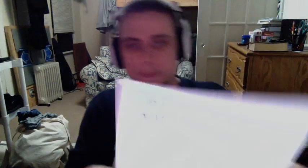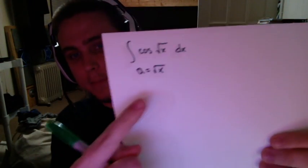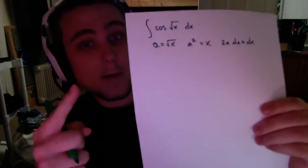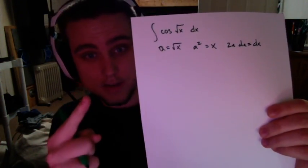So let's make a variable a, and we'll call it square root of x. Now, what happens if we square a? Well, a squared is just x. So we've got a squared equals x. Now, if we take the derivative of both sides, we have 2a da equals dx. Now we have something that we can use here.